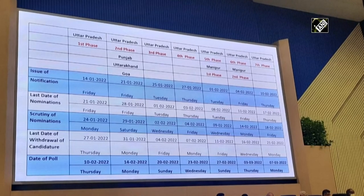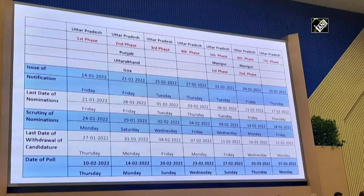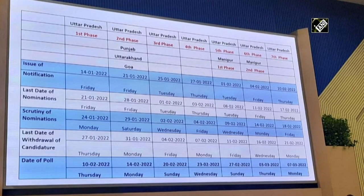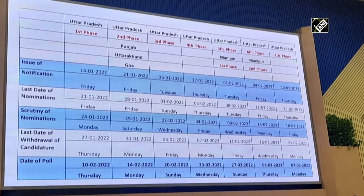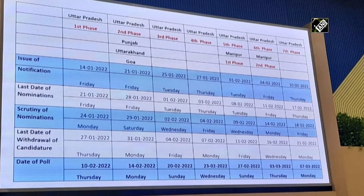All five states combined together will be completed in seven phases. The first date of issue of notification will be 14th January 2022, starting from Uttar Pradesh. This is the first phase of Uttar Pradesh. Issue of notification: 14th January. Last date of nominations: 21st January. Scrutiny of nominations: 24th January. Last date of withdrawal of candidature: 27th January. Date of poll: 10th February 2022. This is the first phase.